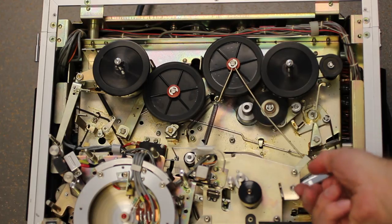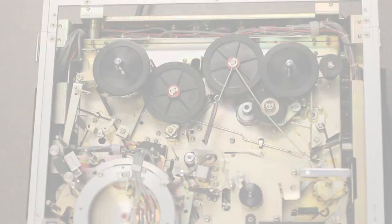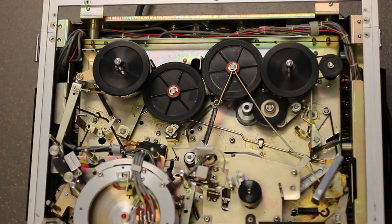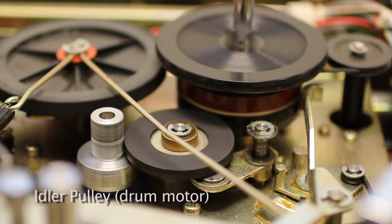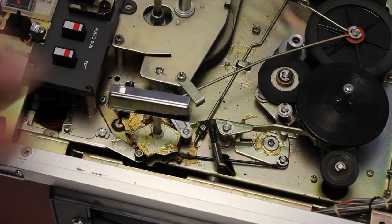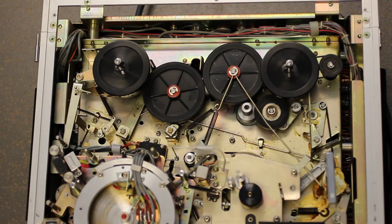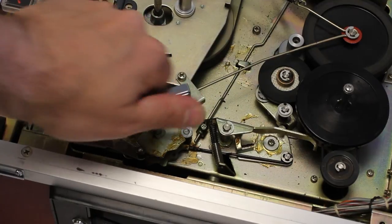When the function lever is used, the cams and the pushrods on the base of the deck engage the transport, spin the idler pulley driven by the drum motor, and move the rubber tires into the appropriate position based on which function is selected with the lever, such as forward play or rewind.